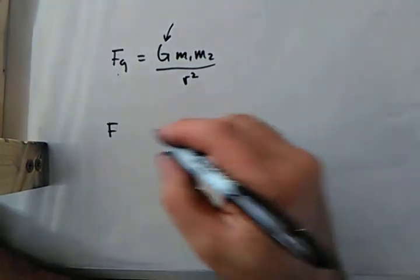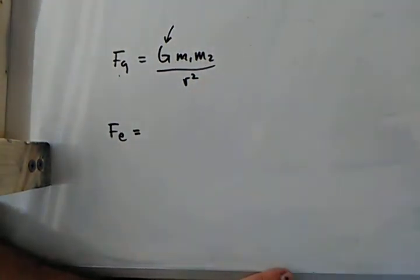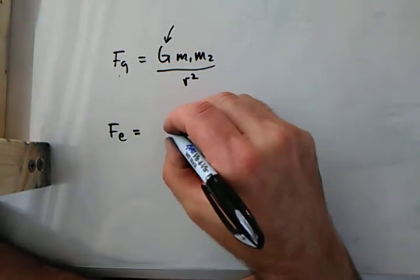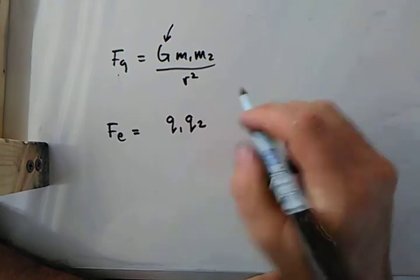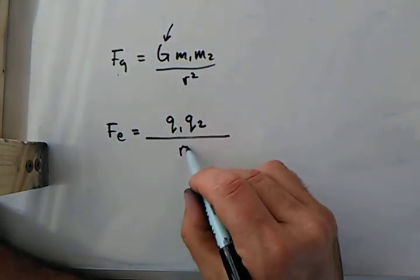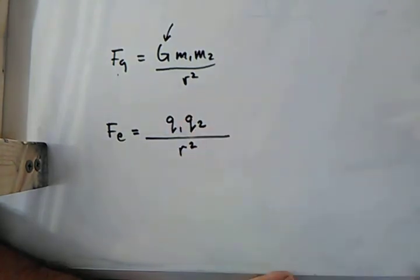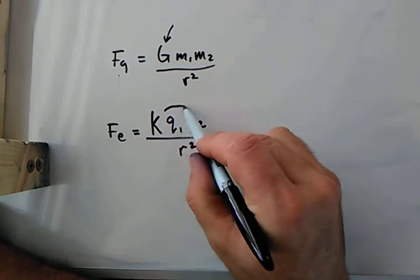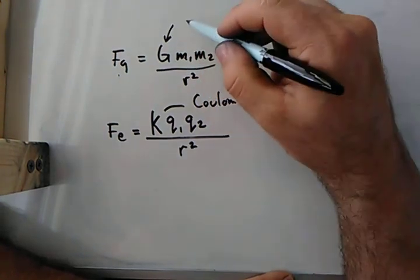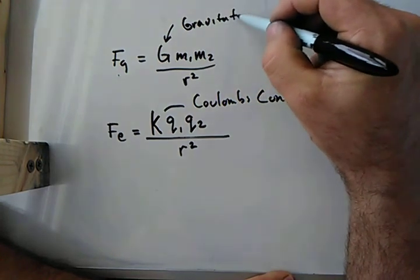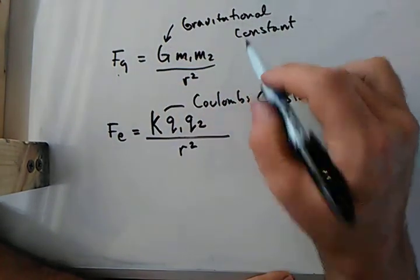Well, it turns out that the electrostatic force, we'll call it Fe, electrostatic force has a similar, comparable equation. So we are actually going to be looking at charges, Q one, Q two, instead of masses. And we're going to be looking at still radiuses here. We're going to be looking at something called, and I'll write it out for you. This is Coulomb's constant. Now, remember here, this was called the gravitational constant.